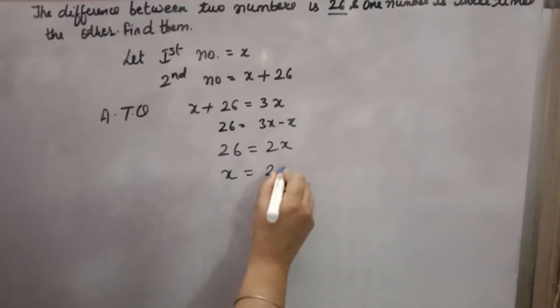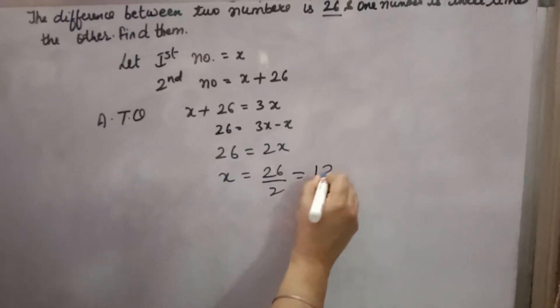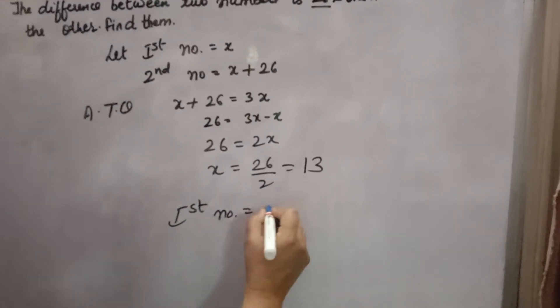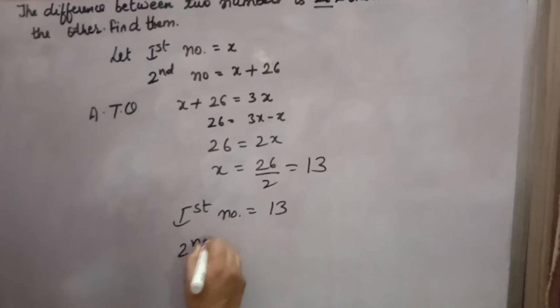x will come 26 over 2, that is 13. So first number is x, that is 13. Second number will be x plus 26, means 13 plus 26, that is 39.